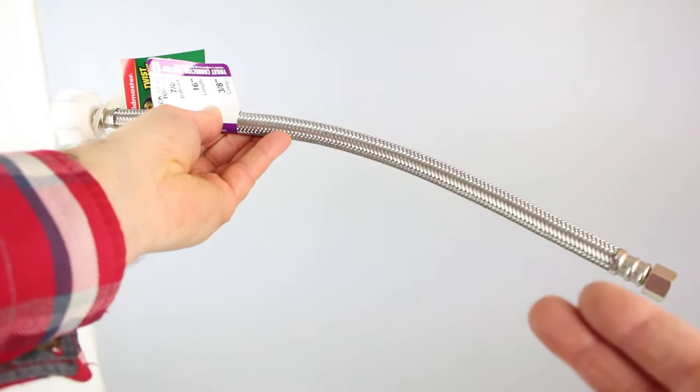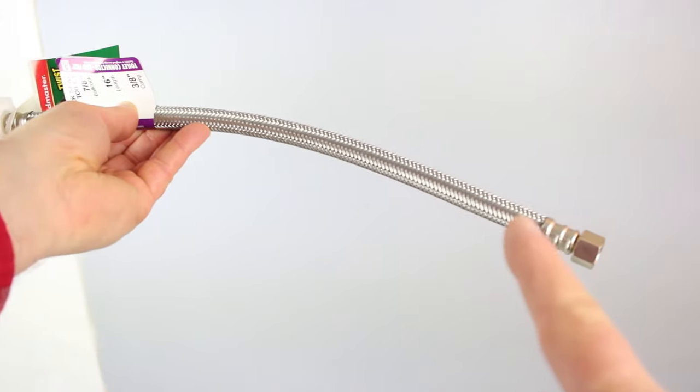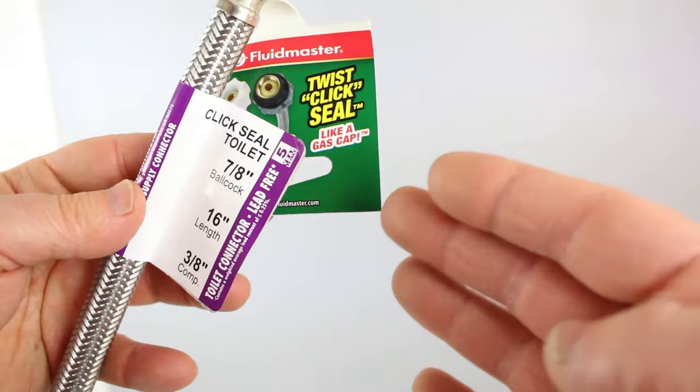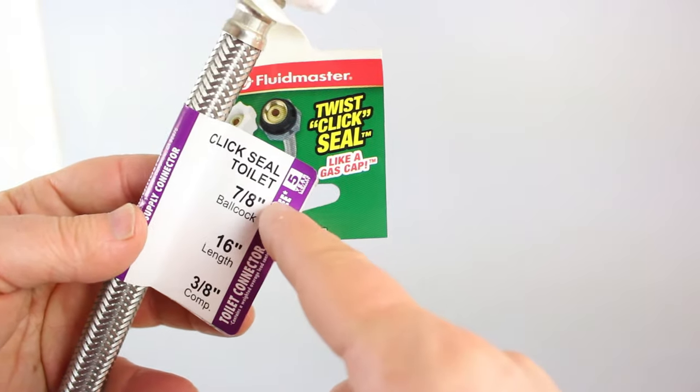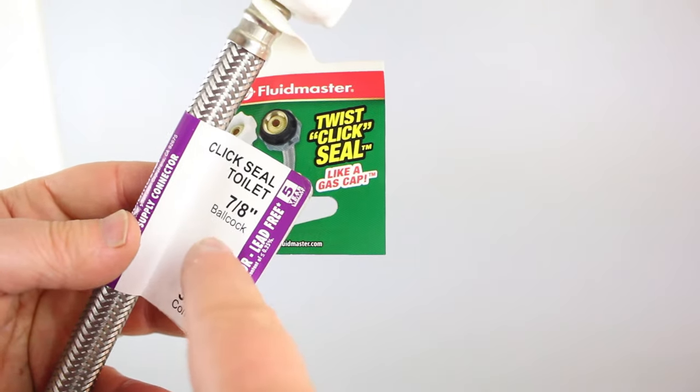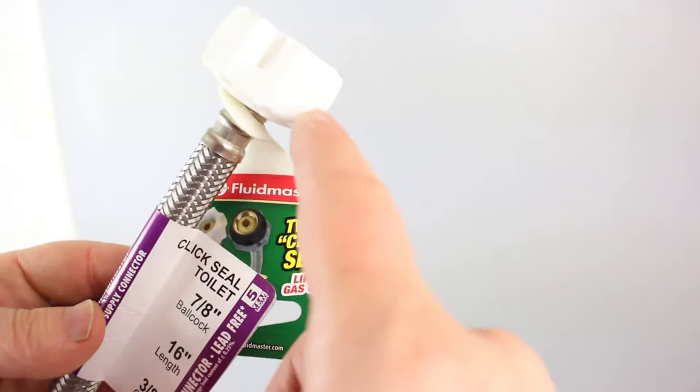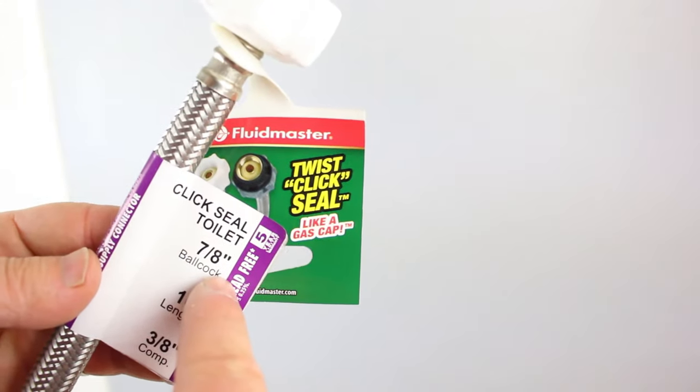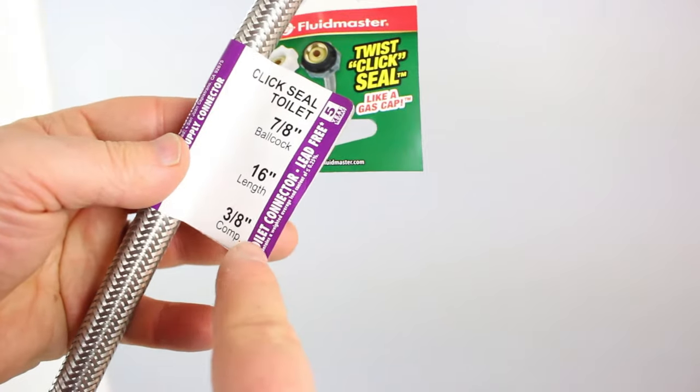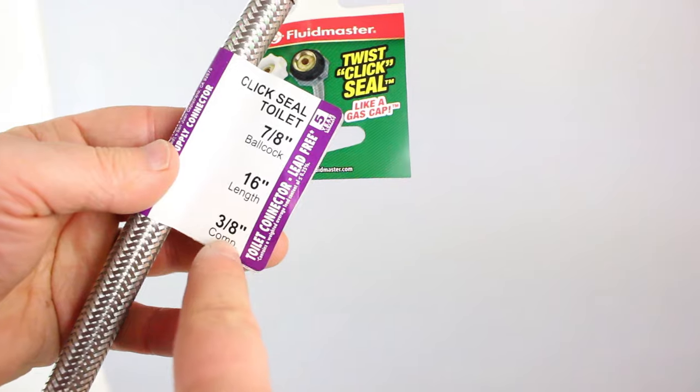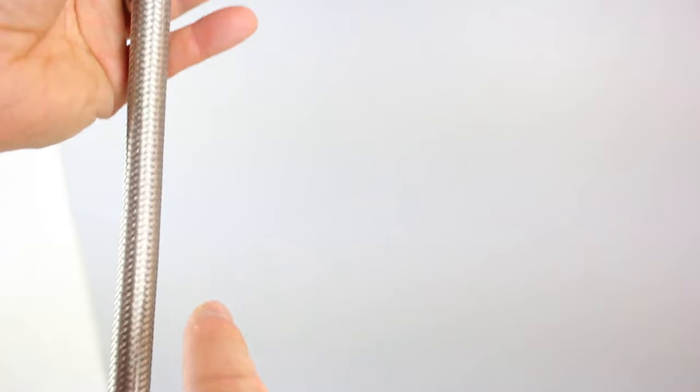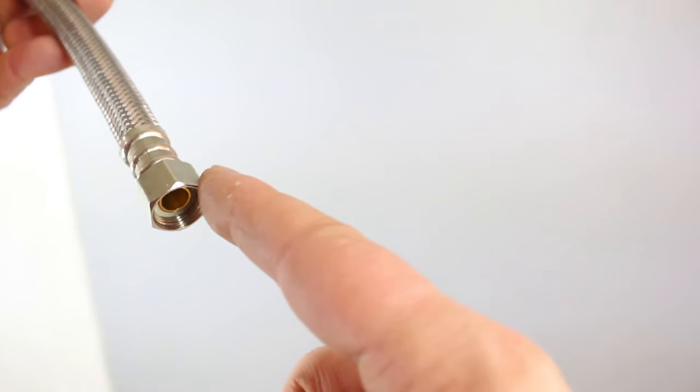This is the new water supply line we're going to be using. It's steel braided, and I highly recommend those because they're more durable than the other types. There are four things to look for on the tag when you go to your home store. Number one, if you want to use this connector, just look for Click Seal Toilet water connector. The connection on top that fits against the fill valve is 7/8 of an inch. This is 16 inches long, so just make sure you get the right length. And then finally, you need to know the compression fitting size that connects up with your shutoff valve. So this is 3/8 of an inch at this connection point that goes with our shutoff valve.